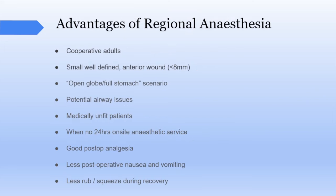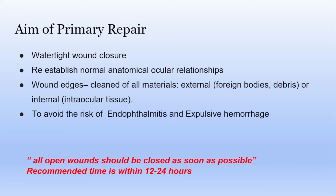Regional anesthesia may be considered in selected cases: a cooperative adult with a very small anterior wound, a patient who is not NPO, patients with potential airway issues where GA is contraindicated, or medically unfit patients when 24-hour on-site anesthesia is not available. Advantages include good post-operative analgesia, less post-operative nausea and vomiting, and less rubbing and squeezing during recovery. The aim of primary repair is watertight wound closure, re-establishment of normal anatomical ocular relationships, cleaning of wound edges, and avoidance of endophthalmitis. All wounds should be closed within 12 to 24 hours.